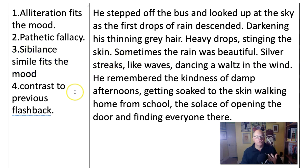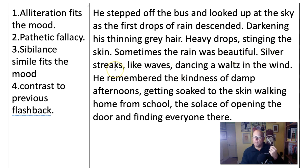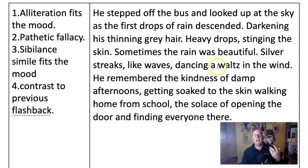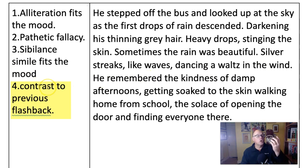Then we have a contrast which reminds us of the previous flashback when he was catching the fish. 'Sometimes the rain was beautiful. Silver streaks' - remember the fish was silver - 'like waves,' which brings us back to the sea in his flashback, 'dancing a waltz in the wind.' Fantastic alliteration with 'waltz' and 'wind' - a peaceful sound. Which again works with a contrast to the mood that he's feeling now in the rain getting off the bus. This simile also therefore fits the mood.